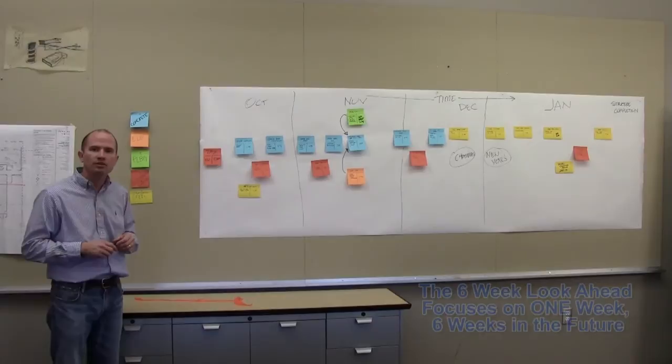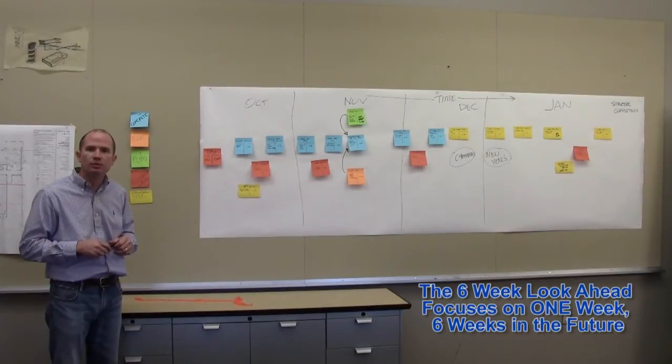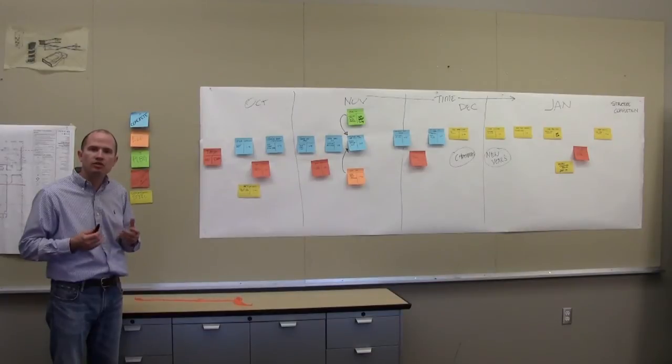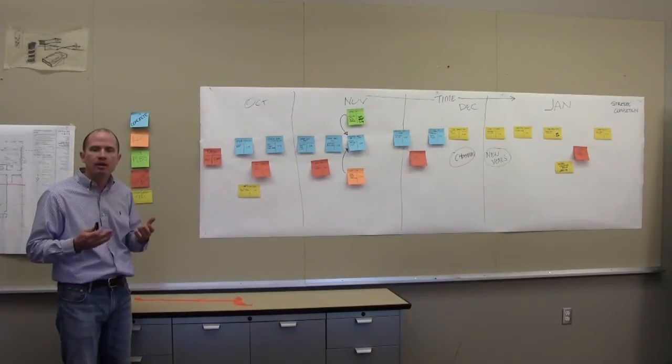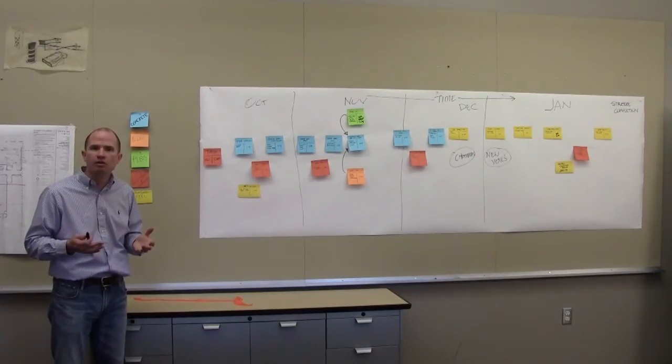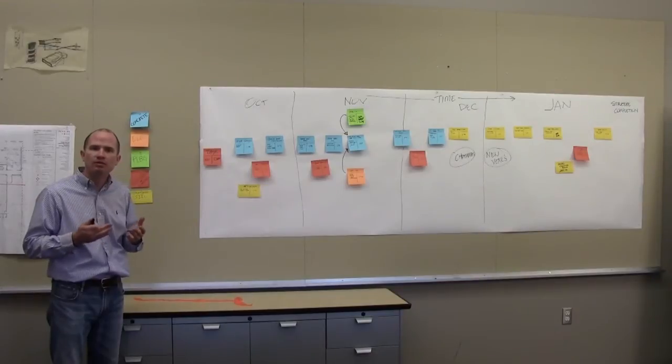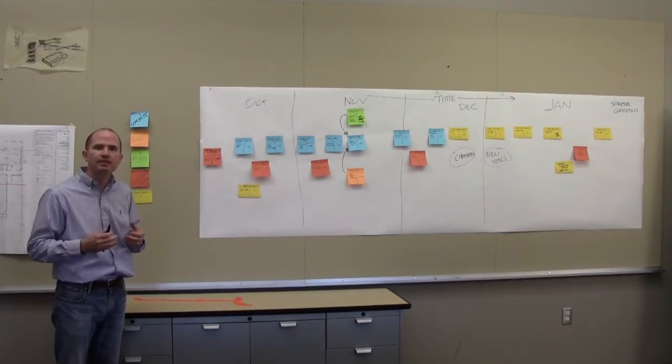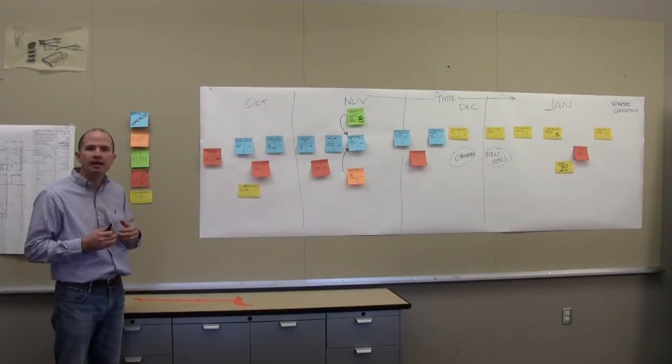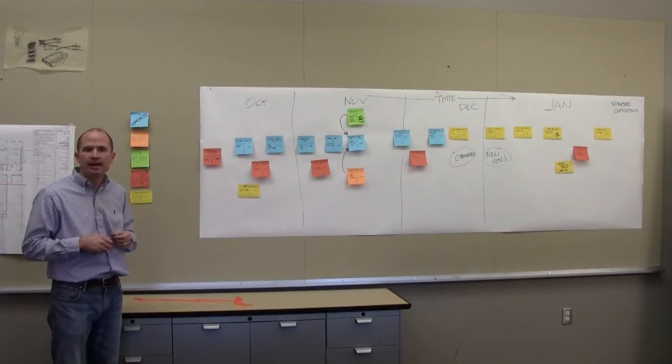The second week that you focus on is the week that is six weeks out. The reason is most construction jobs have problems that can be resolved within a six-week period of time. We know that's not always true, it's not a hard and fast rule, but many problems, if you know in advance six weeks before it affects the task that's going to be going on, you can resolve that. So the idea is to plan the next week and then to look at this week six weeks out.